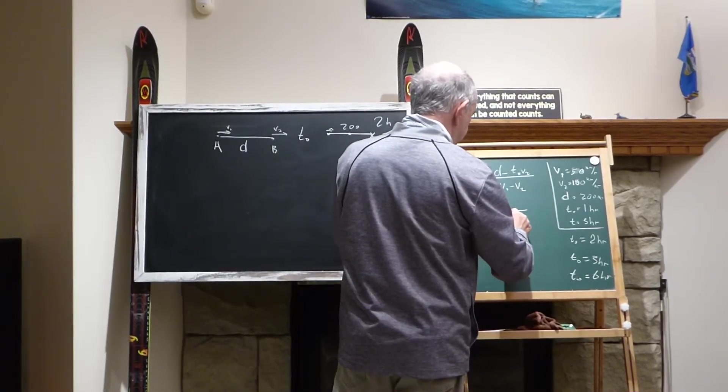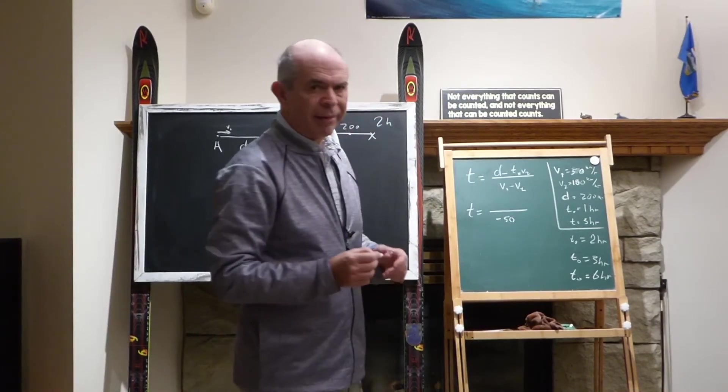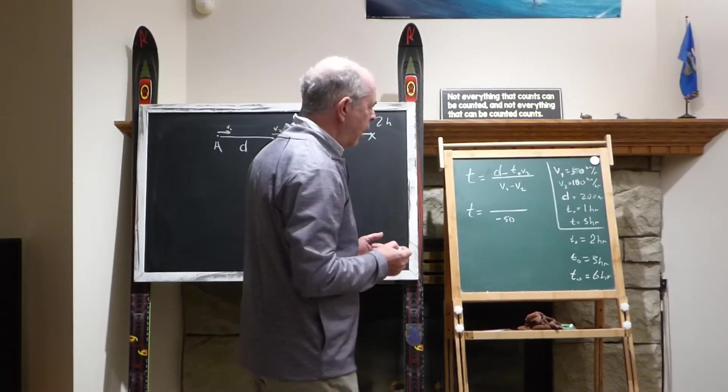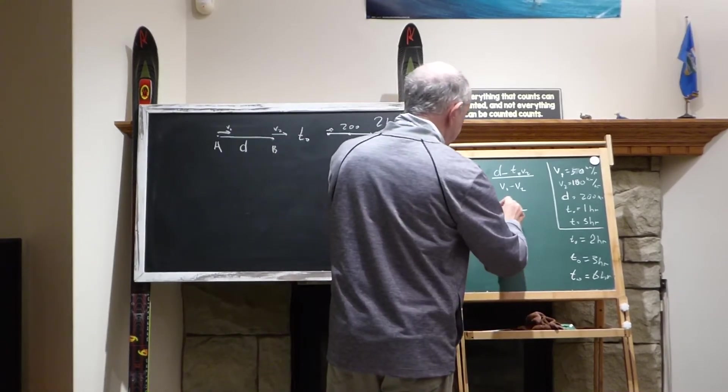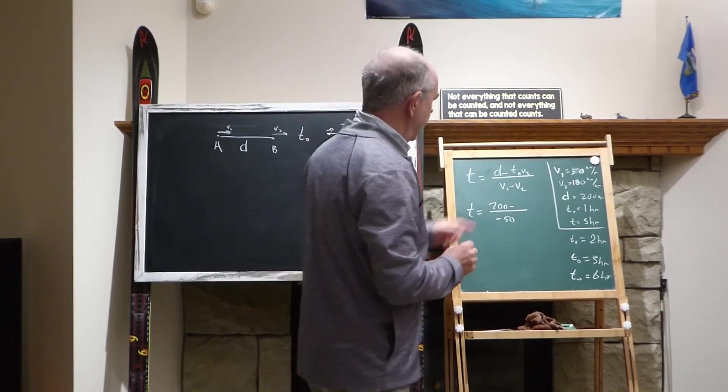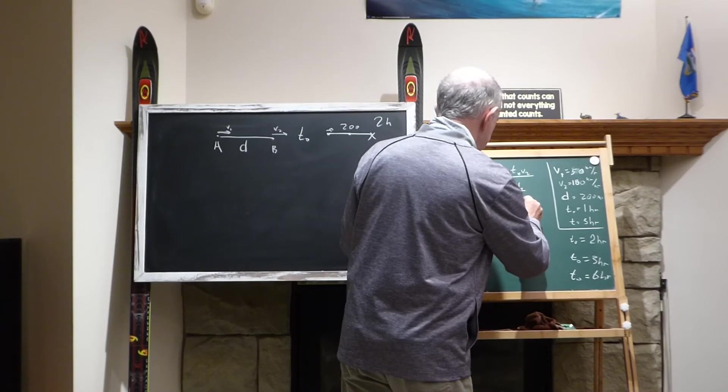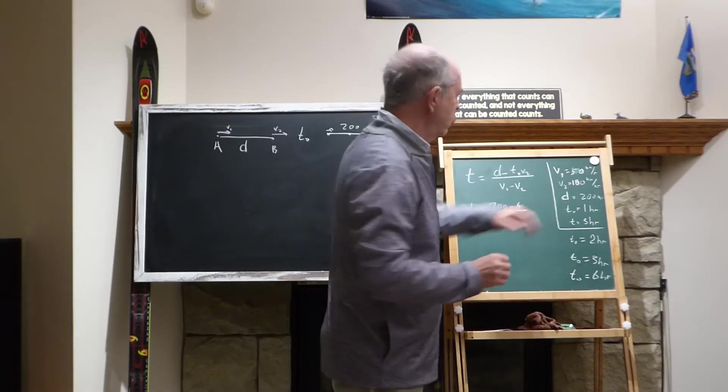Something strange will happen here, because first of all, according to this formula, V1 minus V2 would be minus 50, negative time, and D would be 200 minus, and I still have to put V2, T0 is 6, and V2 is 100.